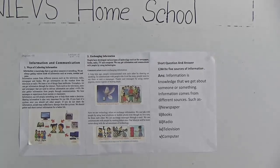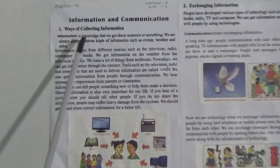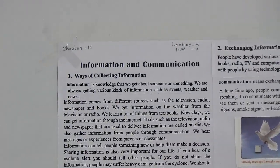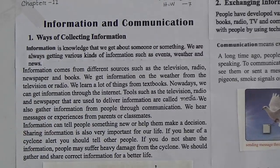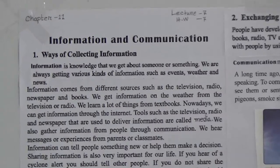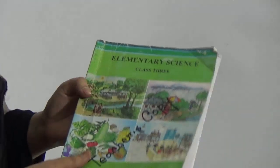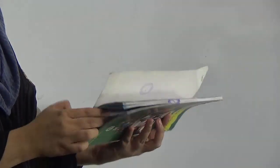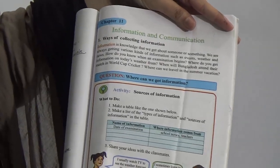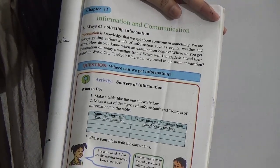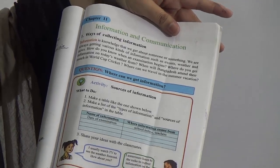First we will read this chapter and then we will do some exercise. We will discuss short questions. This is Chapter 11 in your book. When you are watching this class, you can open your book to Chapter 11 — Information and Communication — on page number 69. Let's start the class.